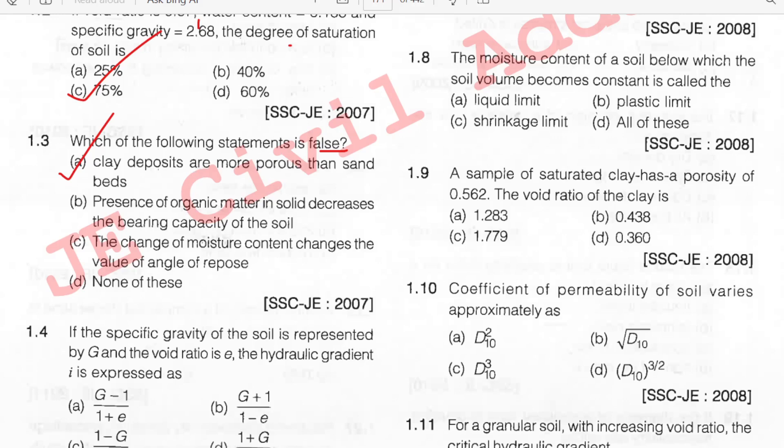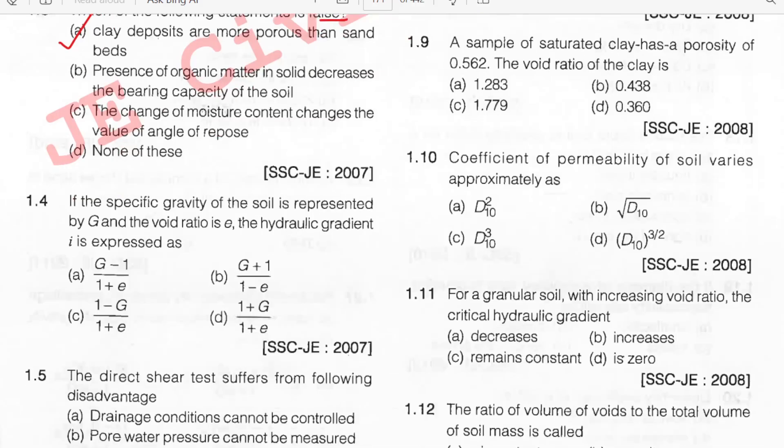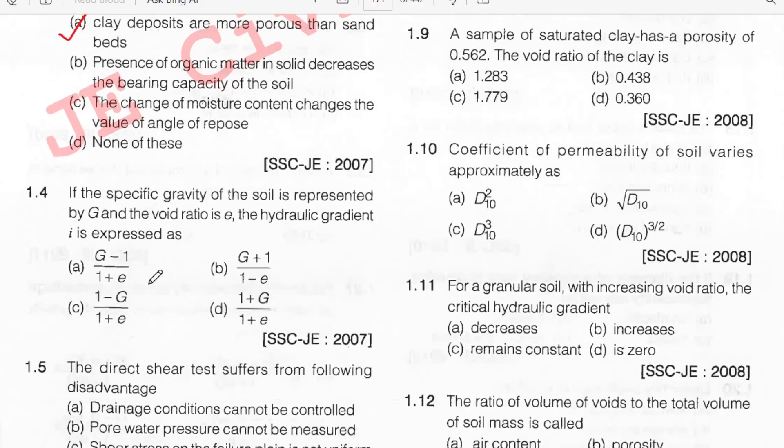If the specific gravity of soil is represented by G and voids ratio is E, the critical hydraulic gradient formula is: I = (G − 1) / (1 + E). Option A.